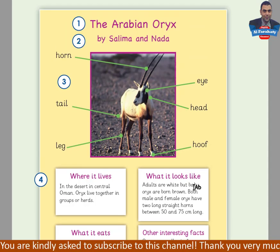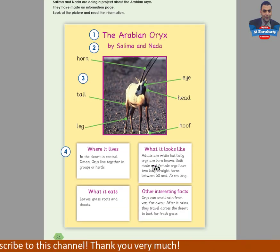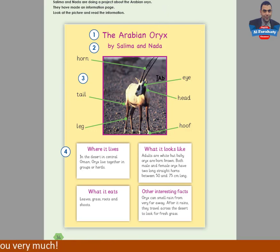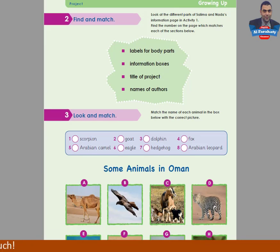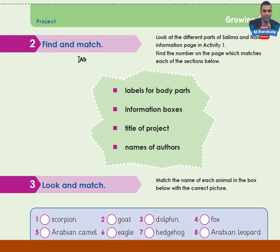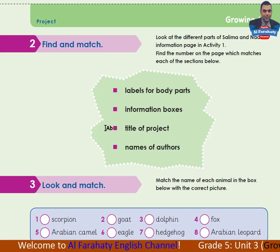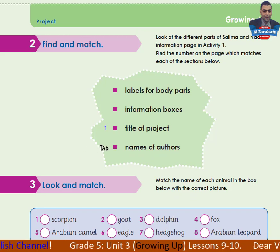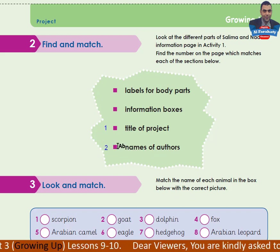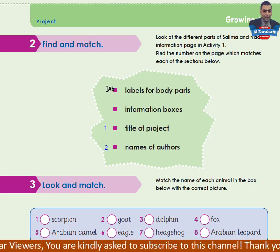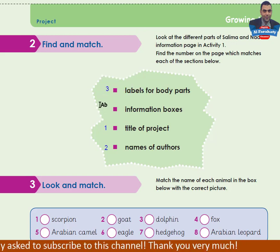Dear students, you are asked in these two lessons to plan for and to make an information page like that. Let's look at page 35. Activity 2 — find and match. Look at the different parts of Salima and Danada's information page in activity 1, find the number on the page which matches each of the sections below. The title of the project is number 1, the names of authors is number 2, the picture of the animal and labels for body parts is number 3, and the information boxes is number 4.